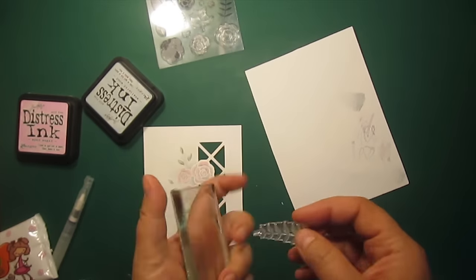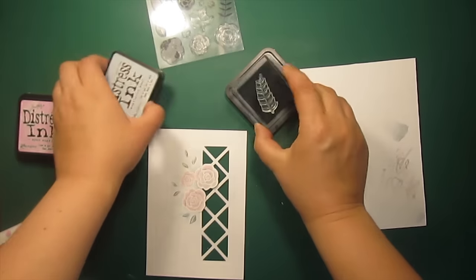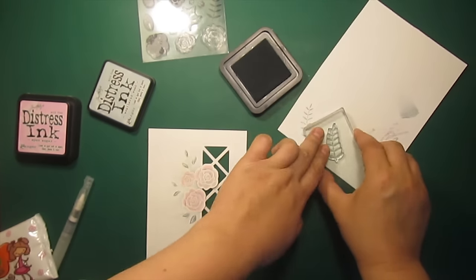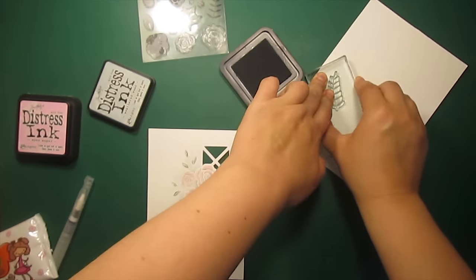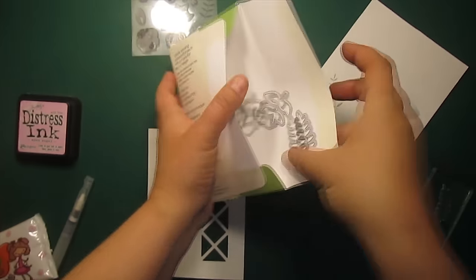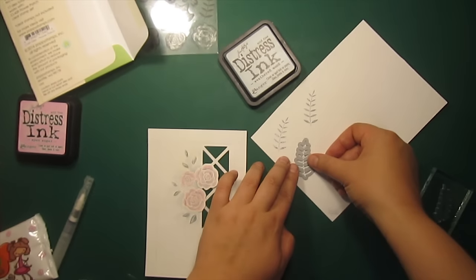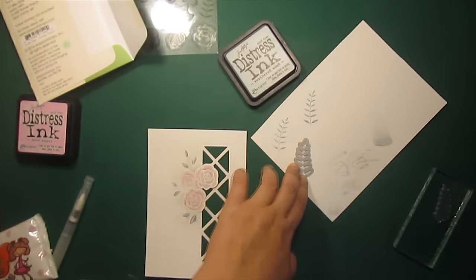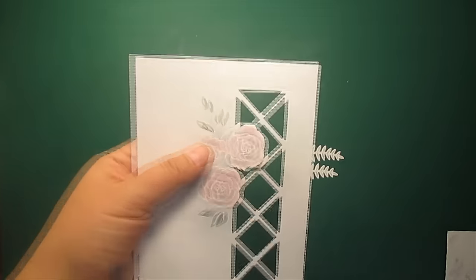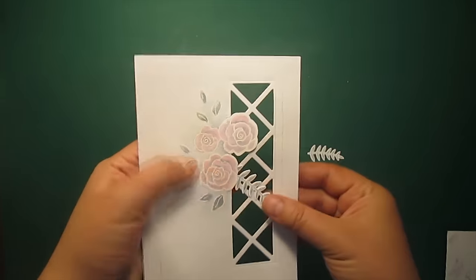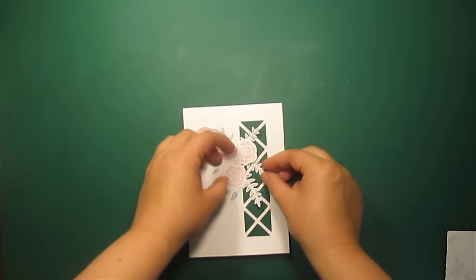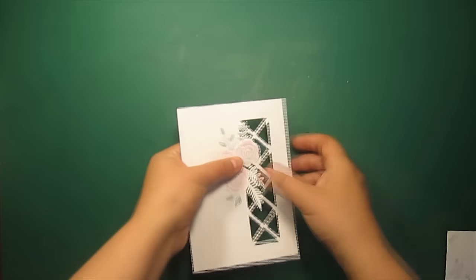Next I'm going to stamp the ferns three times with the weathered wood and use a matching die to cut out the images. I'm tucking the ferns behind the roses and then I'll be securing them at the back side with some pieces of tape.